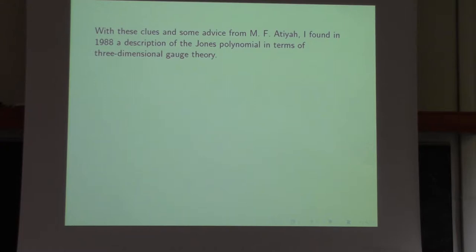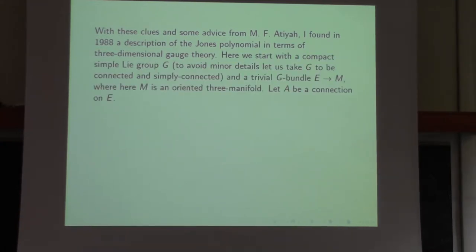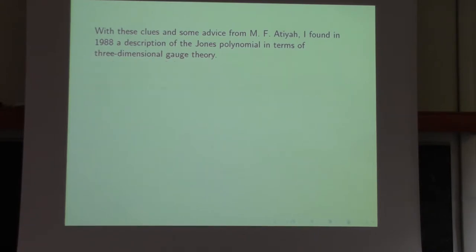With these clues, and also some advice from Michael Atiyah, I found in 1988 a description of the Jones polynomial in terms of three-dimensional gauge theory. The main advantage is that, if you're comfortable with quantum field theory, it gives manifestly a topological invariant. The other definitions are also mysterious as to why they work — you have some recipe for what you do with the knot projection, but it's a little mysterious why it would be true.